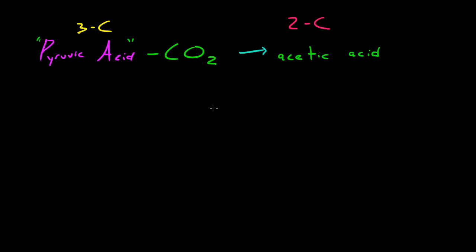Pretend that this black background I'm working on is the matrix of the mitochondria. The first thing that happens is a CO2 is ripped away from this pyruvic acid and it goes from a three-carbon molecule to a two-carbon molecule called acetic acid. That's where we are right now.